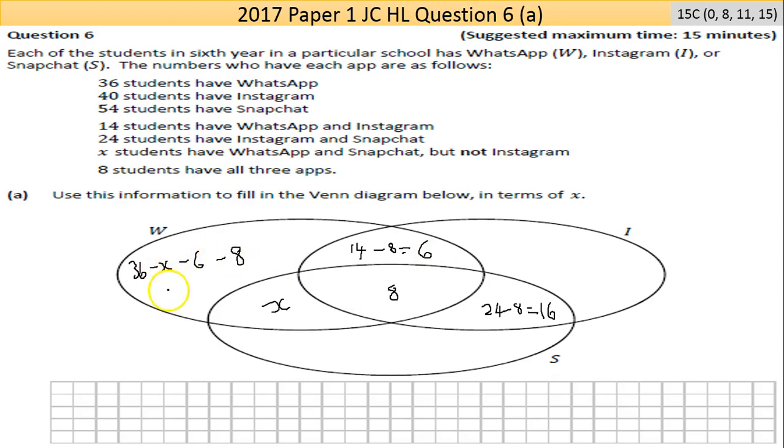From the Instagram point of view there were 40 in total, but you're taking away 6 and taking away 8 and you're taking away the 16 here, so that should be 30. So 40 take away 30 is...